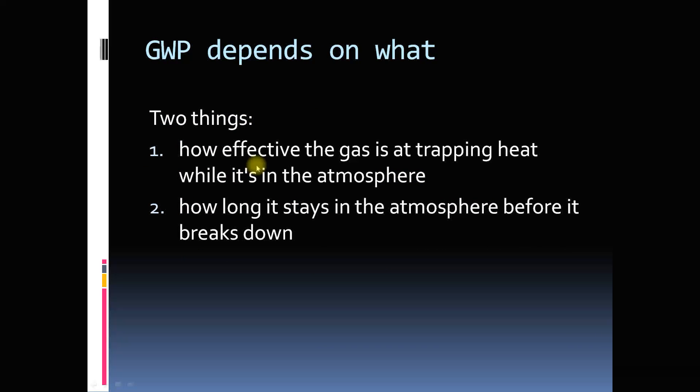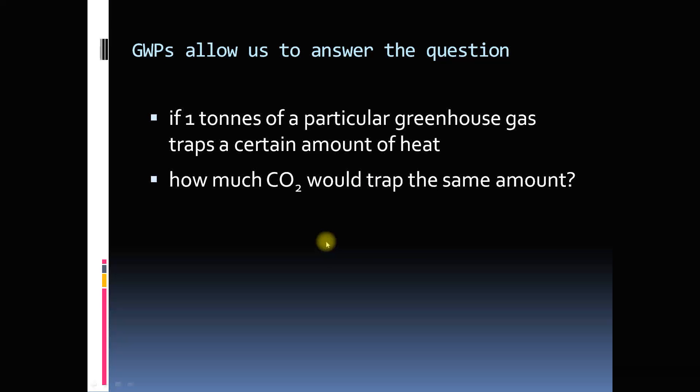Global warming potential mainly depends upon two things: how effective the gas is in trapping heat while it is in the atmosphere, and what is its residence time — that means how long it stays in the atmosphere before it breaks down. So if you take one tonne of a particular greenhouse gas and it traps a certain amount of heat, how much carbon dioxide would trap the same amount of heat? That is what global warming potential is.